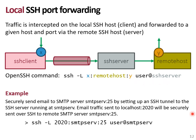What can this be used for? For example, to securely send email to an SMTP server called SMTP serve on port 25, you can set up an SSH tunnel to an SSH server running on the same server that runs SMTP serve, and send all your email traffic to localhost on a port you decide — like port 2020. If you configure your email client to send email to this port, it will securely transmit that email over SSH to SMTP serve.